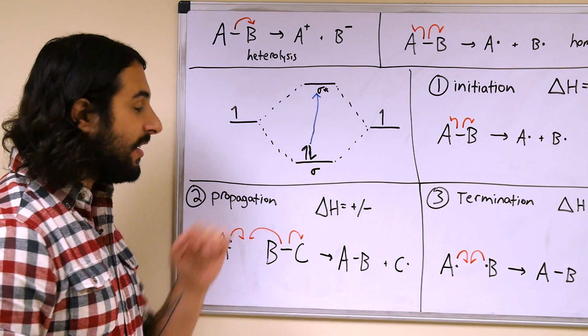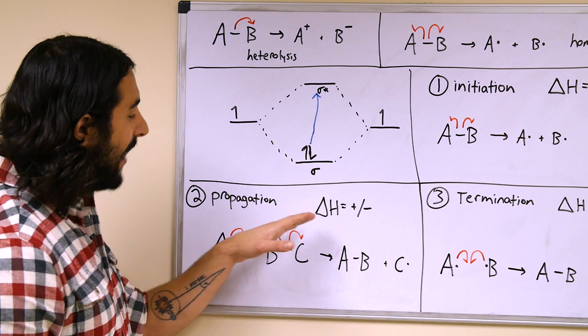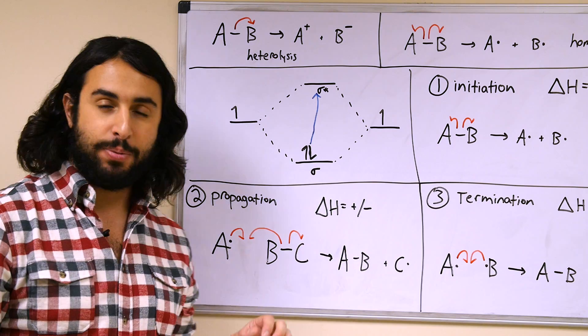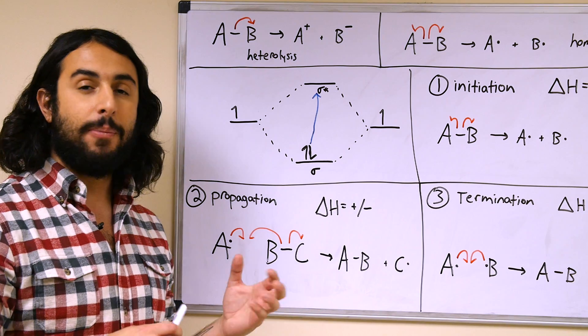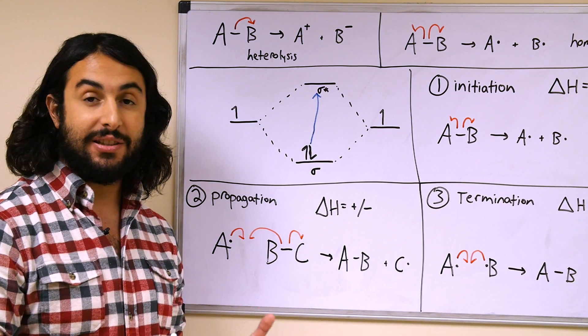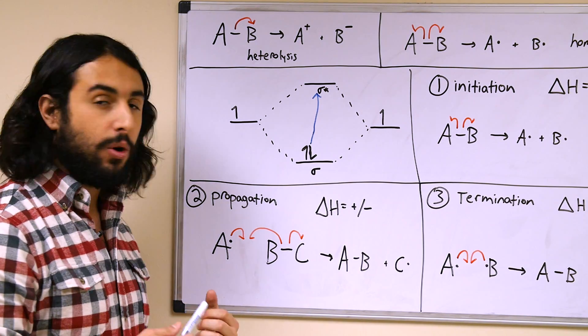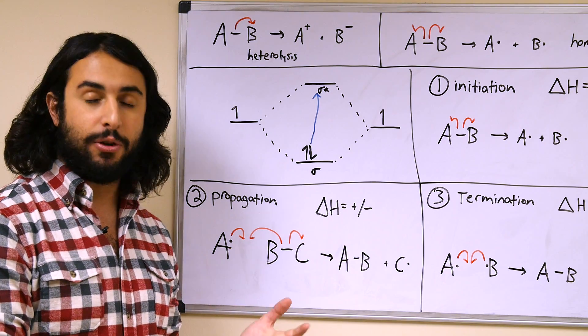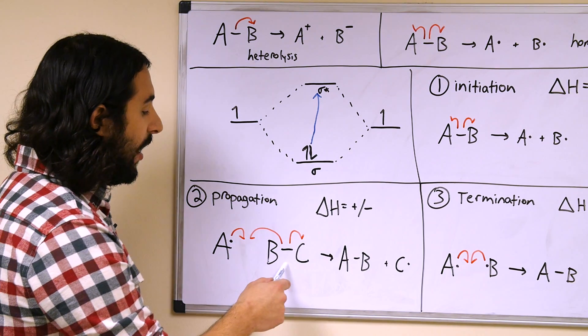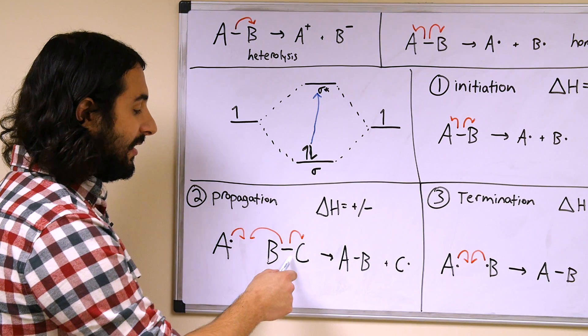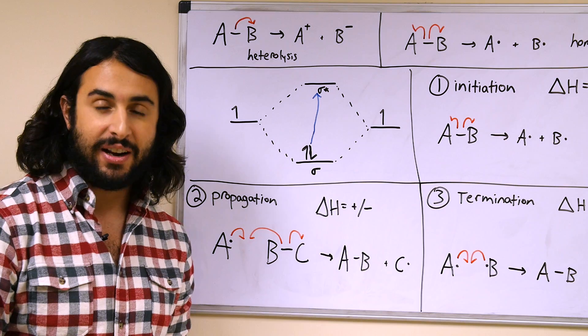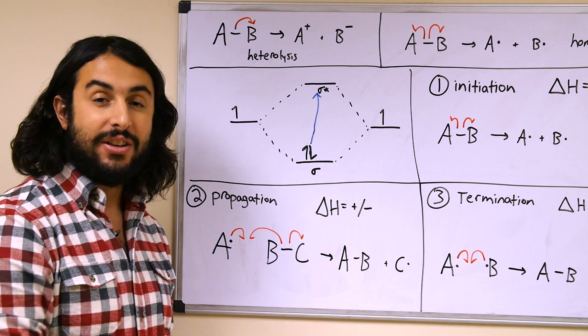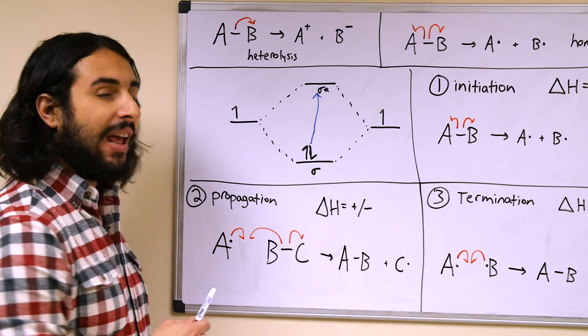Now in terms of enthalpy, you cannot predict offhand whether a propagation step will be endothermic or exothermic because it depends on the bond energies involved. So you could go to a table of thermodynamic data and calculate what the energy is stored in this bond versus the bond that you're generating, and then you could go ahead and calculate the delta H of that reaction. But a propagation step is not inherently endothermic or exothermic.